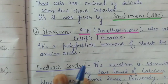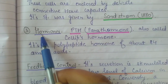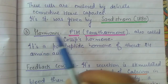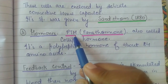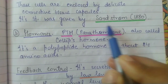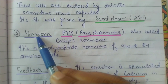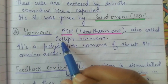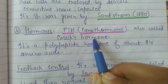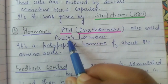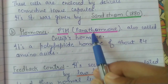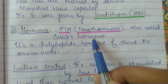The next question is about the hormones secreted by the parathyroid gland. The chief cells secrete PTH hormone, also known as parathormone hormone. This hormone is also known as Kulips hormone, named after its discoverer, James Kulip. So PTH and parathormone hormone are also called Kulips hormone.